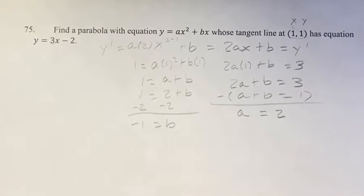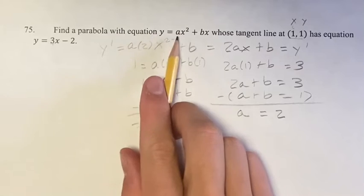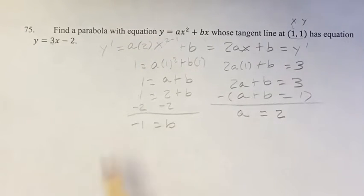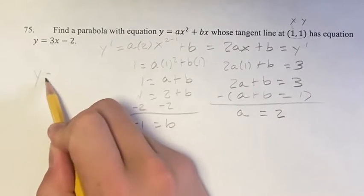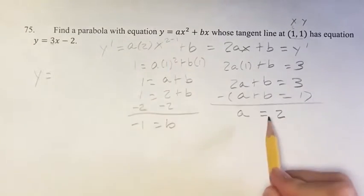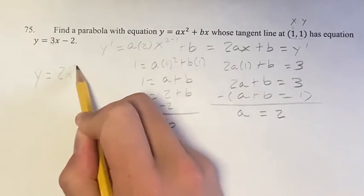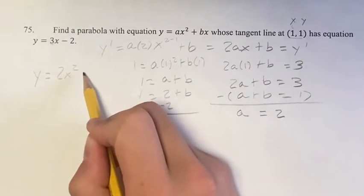So we're looking to find the parabola with the equation y equals ax squared plus bx. We didn't know what a and b were, but now we do. If we plug that in, we get y is equal to 2x squared plus bx, which is minus x.